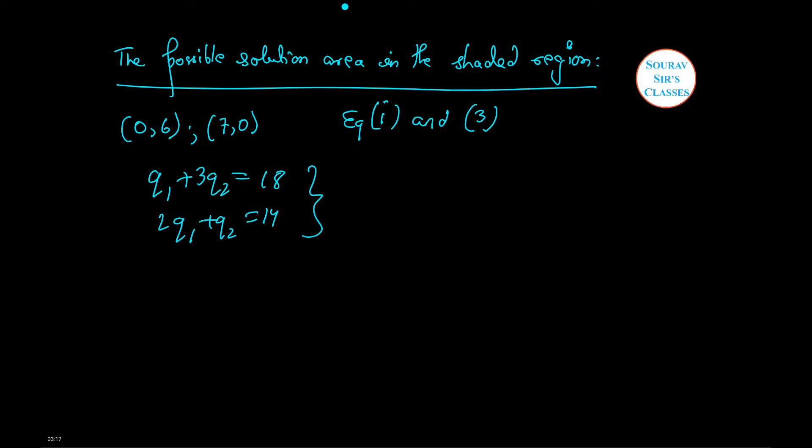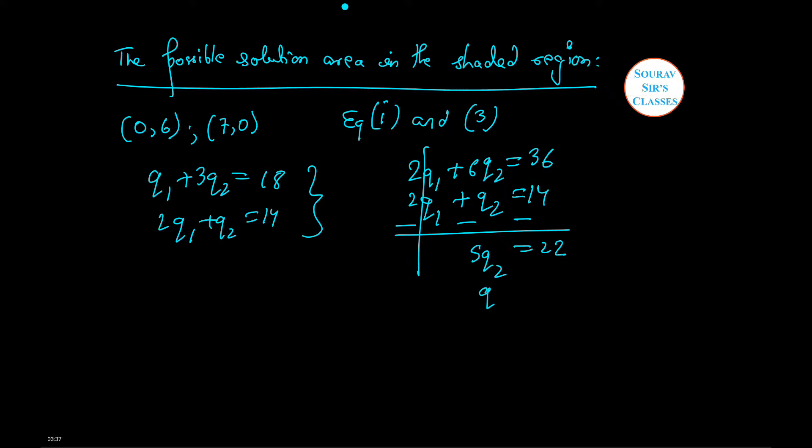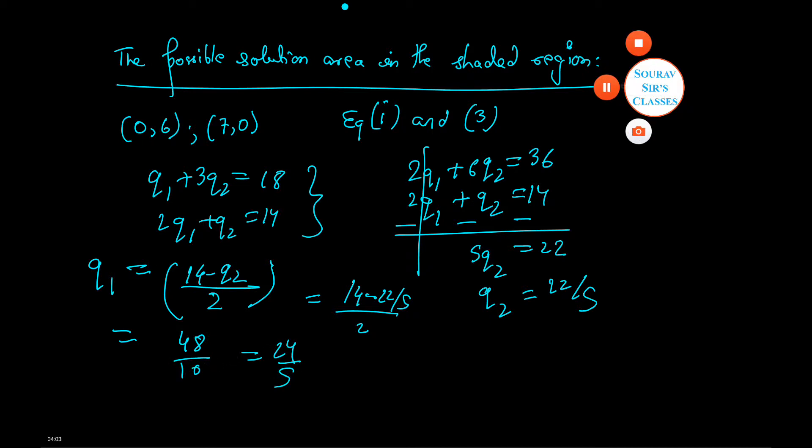Now upon solution of these two we get Q1 equals 14 minus, let us just equate the two so that it becomes clear for you how I am doing this. This gets cancelled thus the value of Q2 equals 22 by 5. Now let us find Q1. Q1 from the equation comes as 14 minus Q2 by 2 or 14 minus 22 by 5 by 2 which is nothing but 48 by 10 which is equal to 24 by 5.